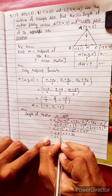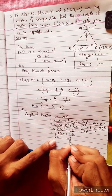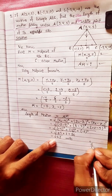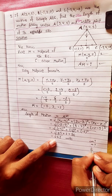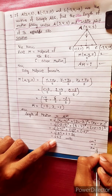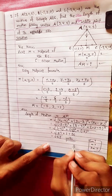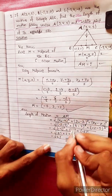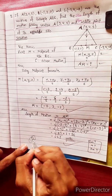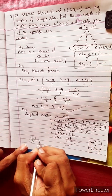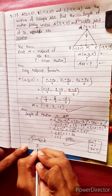The length of the median AM is under root 62 units.